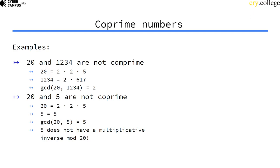Another example: 20 and 5 are not co-prime either because 20 can be factorized into 2 and 5, and 5 is already a prime number. They share the prime factor 5, so they're not co-prime. The greatest common divisor is 5.